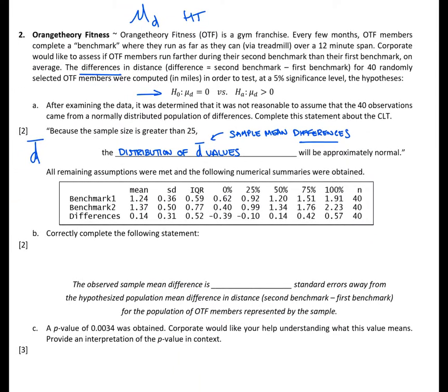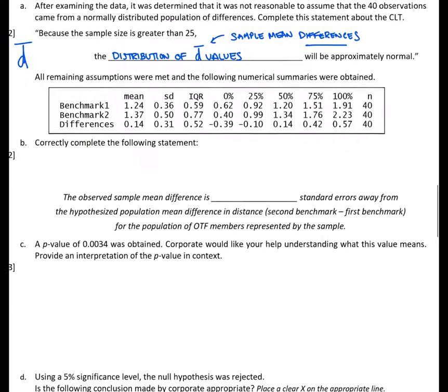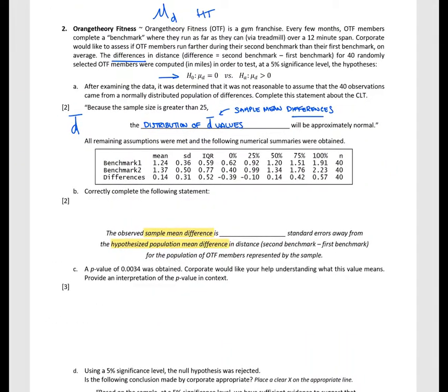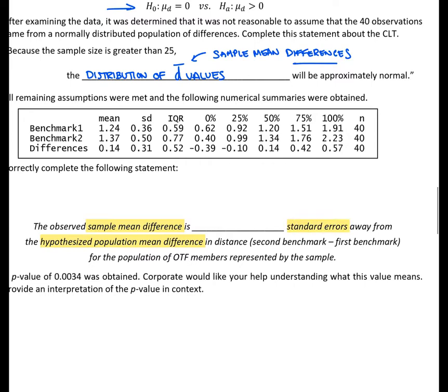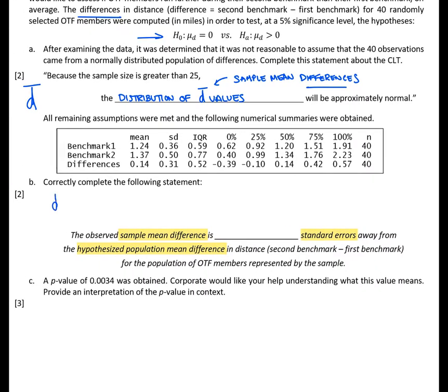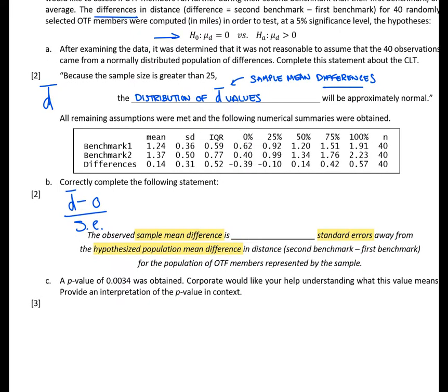Moving on to the next question. Correctly complete the following statement: The observed sample mean difference is blank standard errors away from the hypothesized population mean difference in distance for the population of OTF members represented by the sample. If we break this down, we've got our sample mean difference, which is D bar. We want to know how far away that is from our hypothesized population mean difference, which we know from our null hypothesis is a value of zero. So how far is D bar from zero in terms of standard errors? If we think about what that would look in a formula, we're seeing how far D bar is away from zero in terms of standard errors. This is simply an interpretation of our t-test statistic for this scenario.